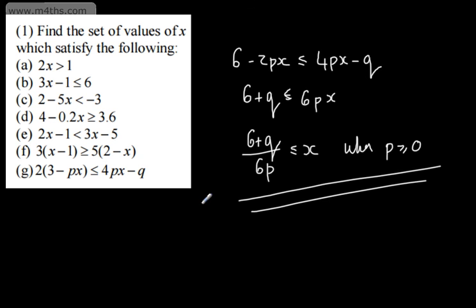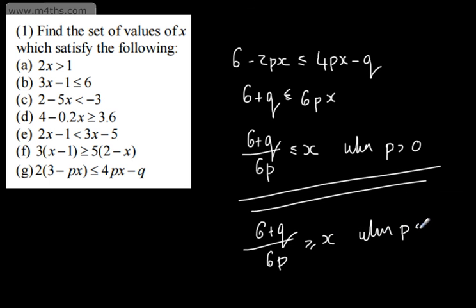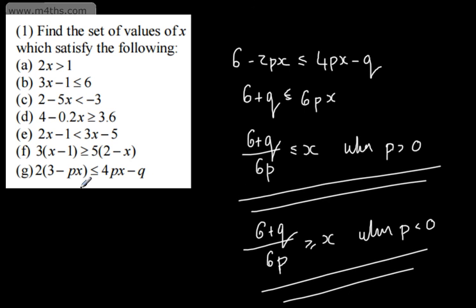If p is less than 0, we flip the inequality: 6 plus q over 6p is equal to or greater than x, valid when p is less than 0. Note that p cannot equal 0 as that would cause division by zero. So those are linear inequalities — in the next video we'll look at quadratic inequalities and then both linear and quadratic together.